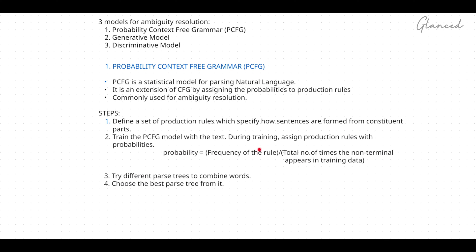After finding the probabilities, the third step is to find the different parse trees for the given sentence. Then in the fourth step, you have to find the best parse tree from the different parse trees found in step three. This is the overall process of Probabilistic Context-Free Grammar.